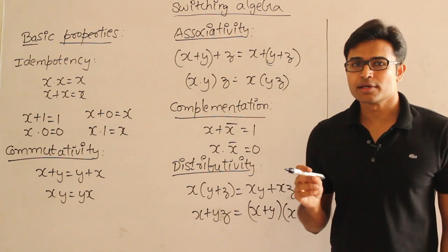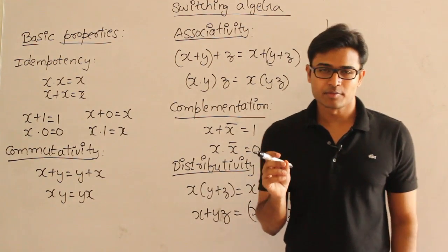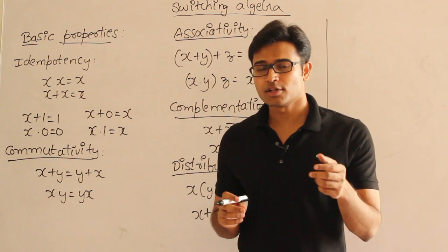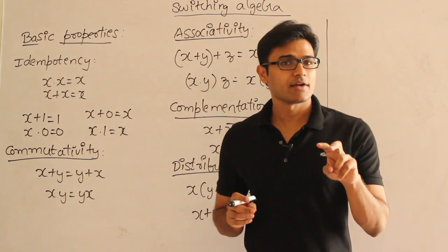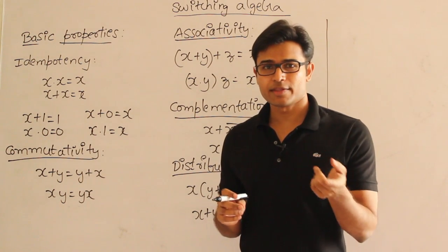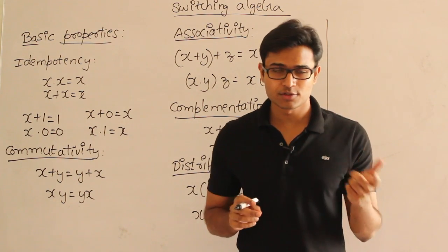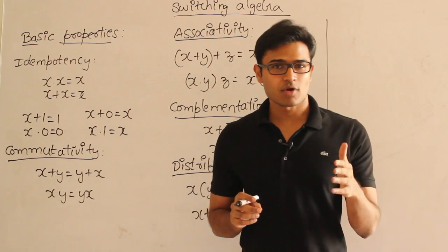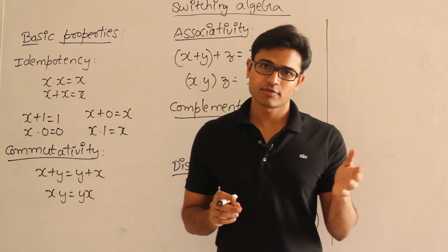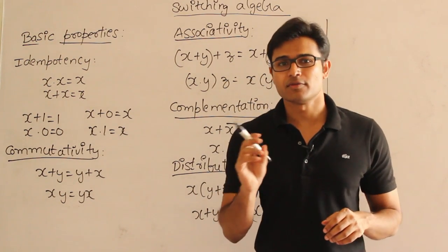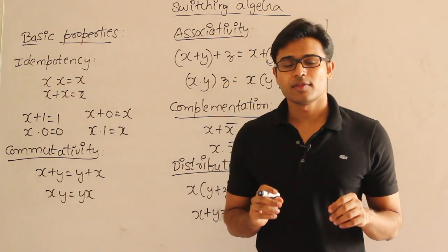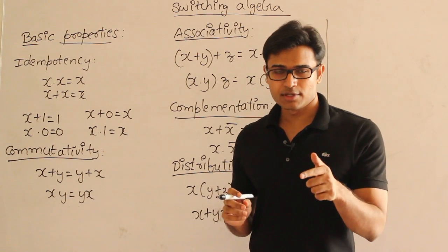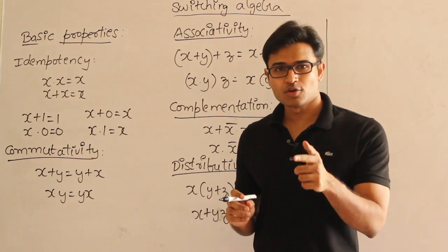The basic element of Boolean algebra is a Boolean variable. Boolean algebra is also called switching algebra. Any variable will take two values: zero or one. Zero means false and one means true. The basic element of switching algebra is a Boolean variable, and a Boolean variable can take zero or one.